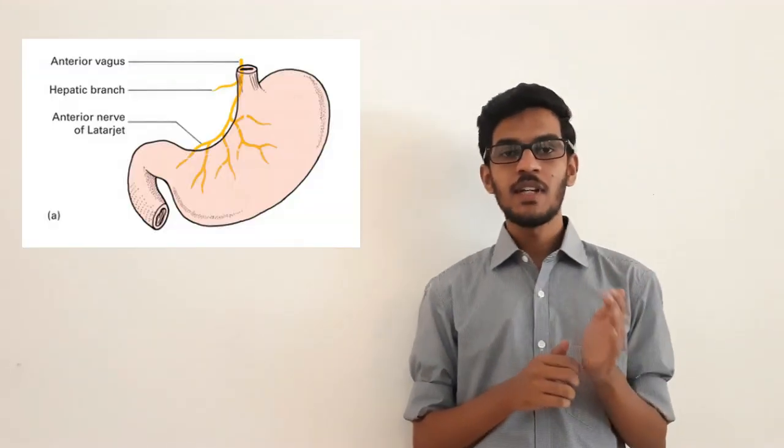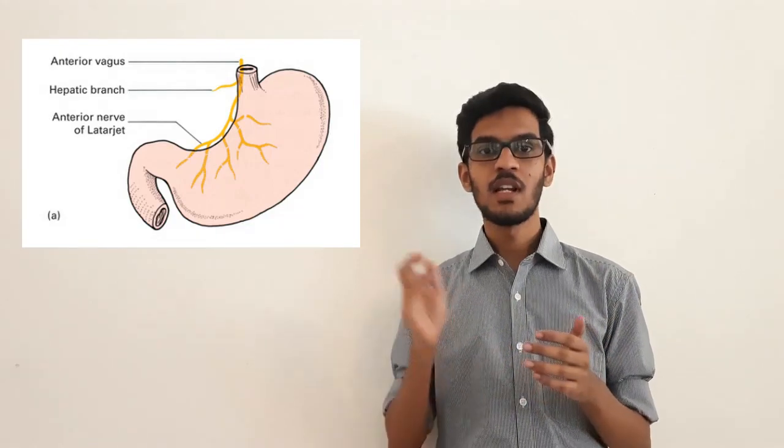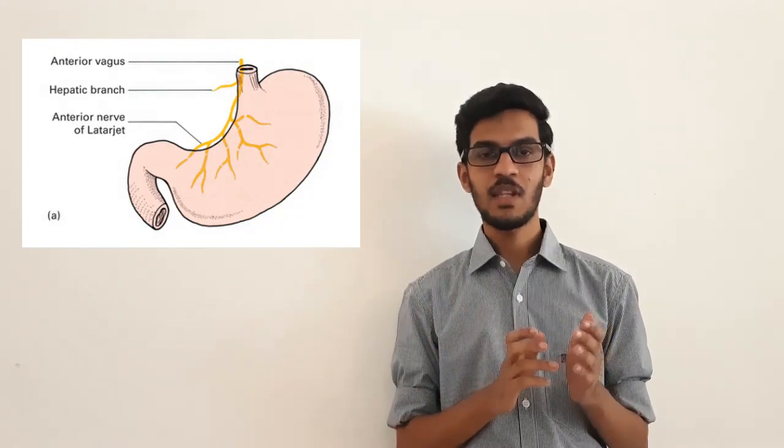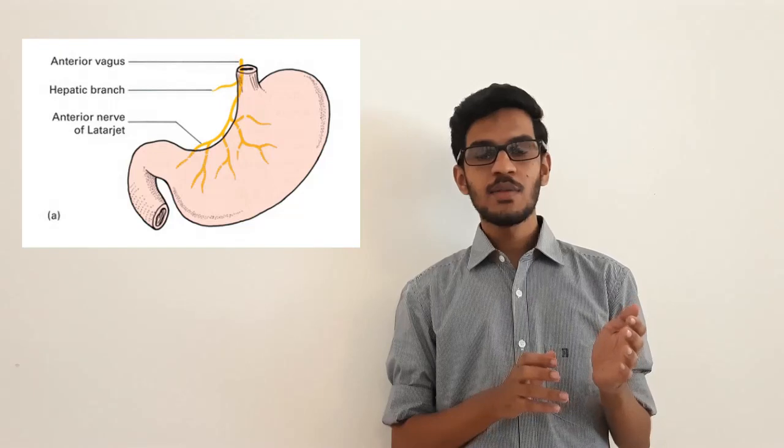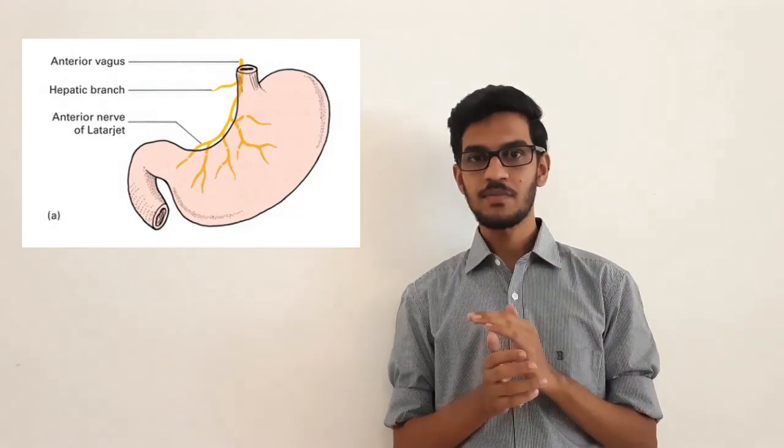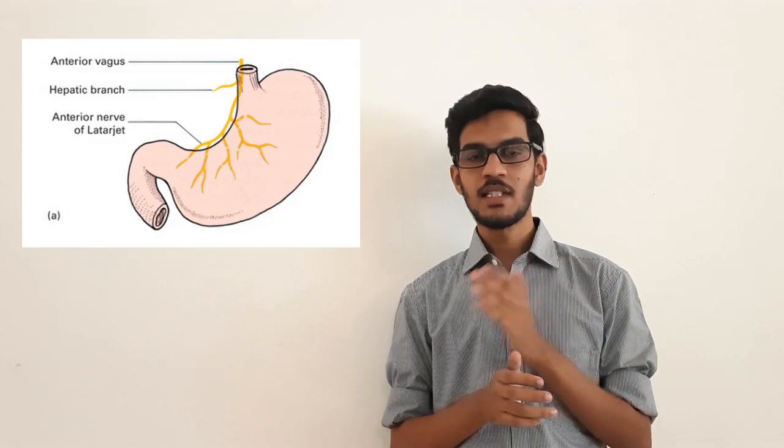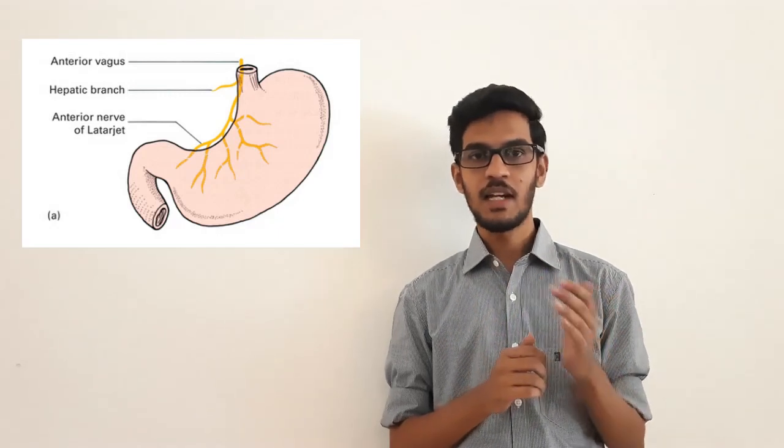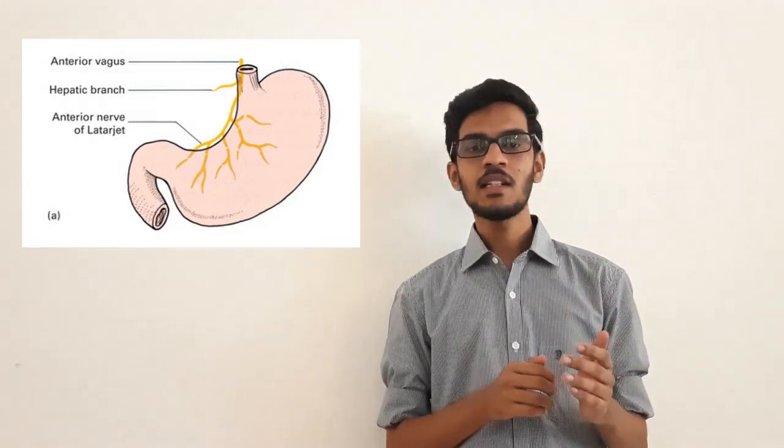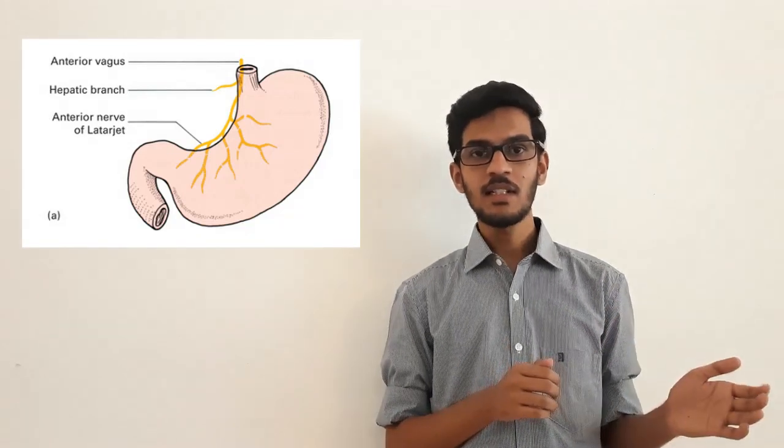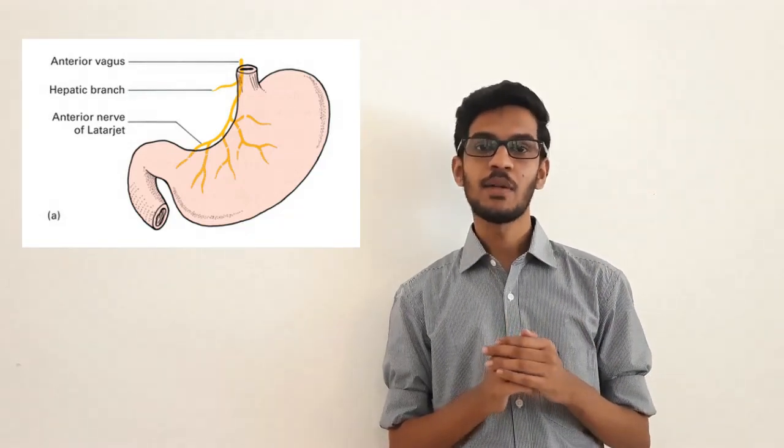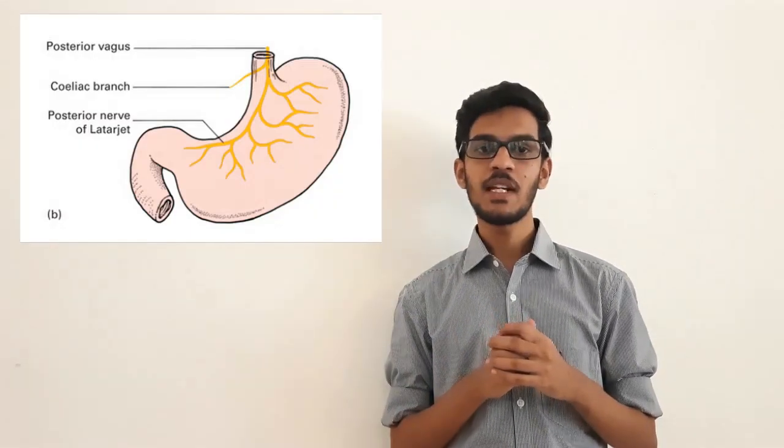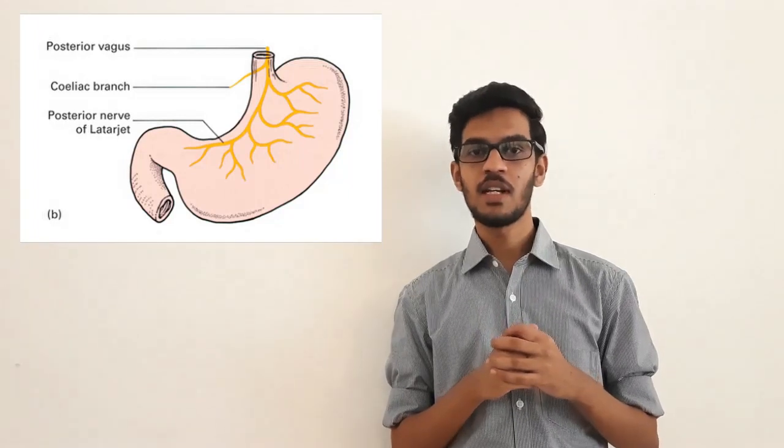They are supplied by vagal trunks. The anterior vagal trunk mainly consists of left vagus fibers and it gives off a hepatic branch and also gives gastric branches to fundus and body. It's the anterior nerve of latarjet.